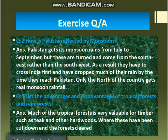Question number 2: How is Pakistan affected by monsoons? Pakistan gets its monsoon rains from July to September, but these winds come from the south-east rather than the south-west. Pakistan's monsoon rains should ideally come from the south-west, but they turn and come from the south-east instead.